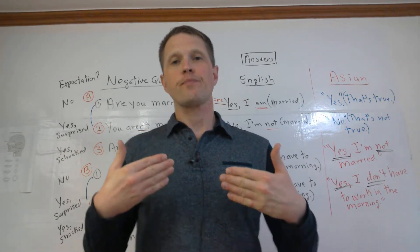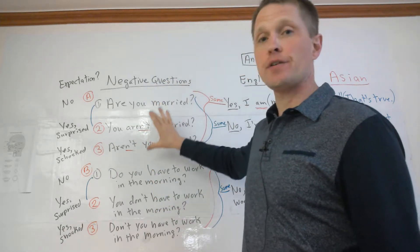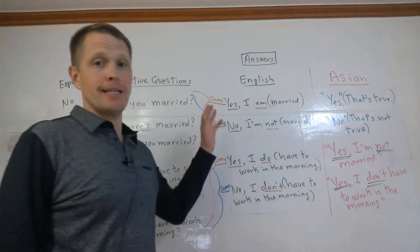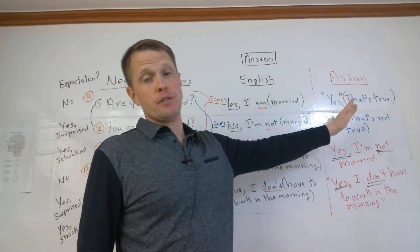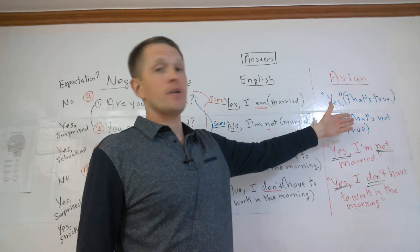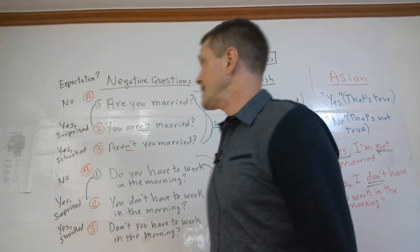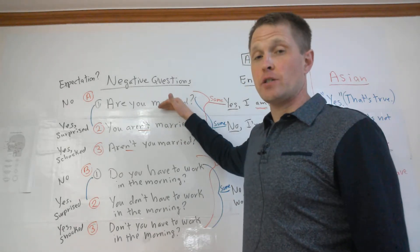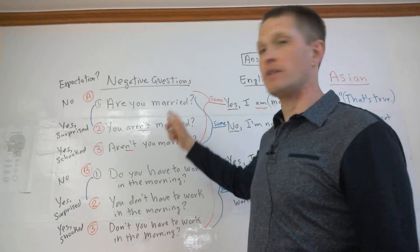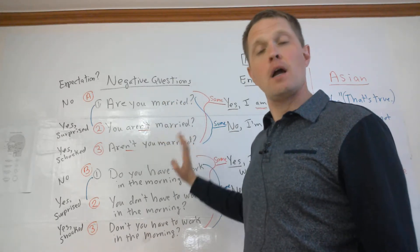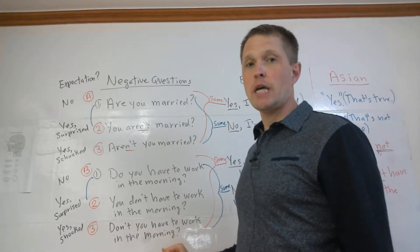In this video I want to talk about negative yes/no questions and how they're different from positive yes/no questions, and how the answers that native or proficient English speakers give differ from what some Asian language speakers — such as Korean or Japanese speakers — give, due to how things work differently in their language. Let's look at how positive yes/no questions differ from negative yes/no questions, using two sets of examples: 'Are you married?' vs. 'You aren't married' / 'Aren't you married?' — these are not the same. A lot of students think they are, and I often hear students use the 'aren't you' or 'don't you' version thinking it's the same as the first one, but it's definitely not.